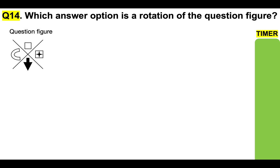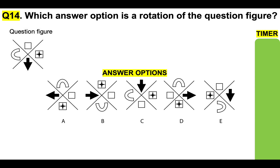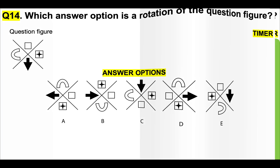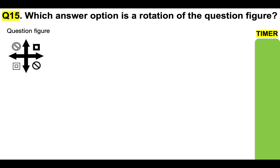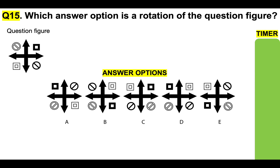Question 14: which answer option is a rotation of that question figure — A, B, C, D, or E? Here is your timer. And finally, question 15: which answer option is a rotation of the question figure — A, B, C, D, or E? Here is your timer.